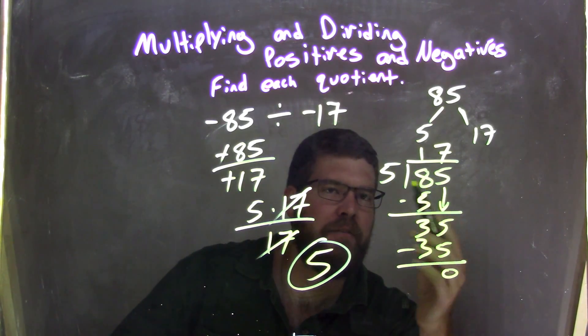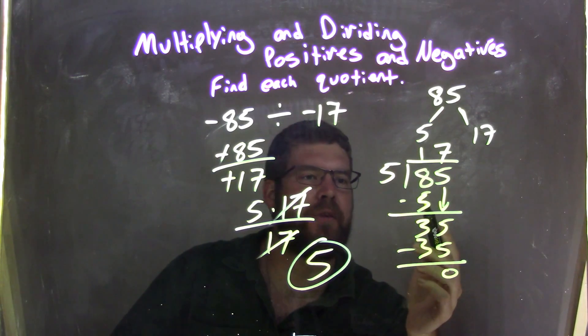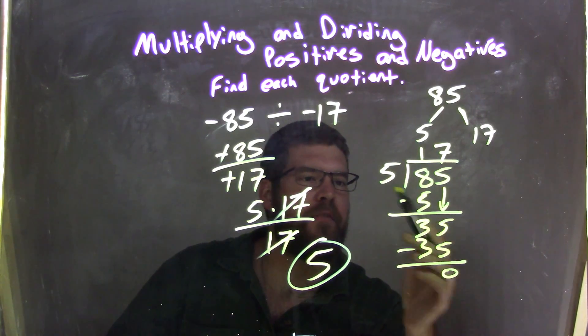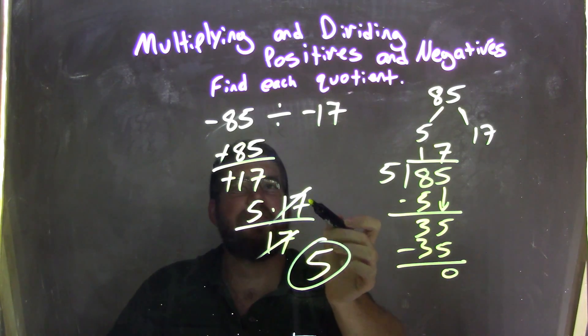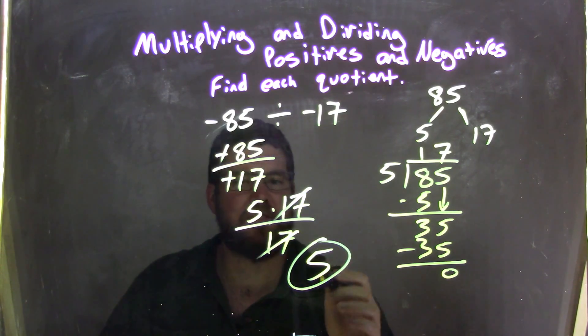5 into 8, one time. 1 times 5 is 5. 8 minus 5 is 3. Bring down the 5, 35. 5 goes into 35 seven times. 7 times 5 is 35, subtract it. We have 0 here, so you have 17. So 5 times 17 is 85. Divide by 17 is just 5.